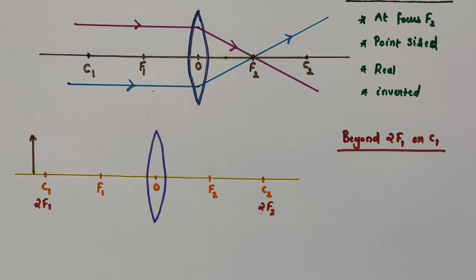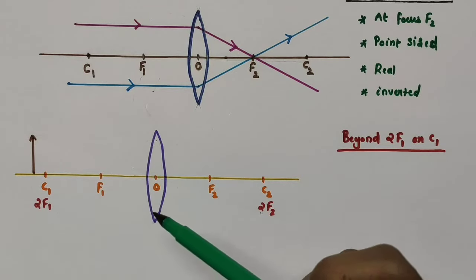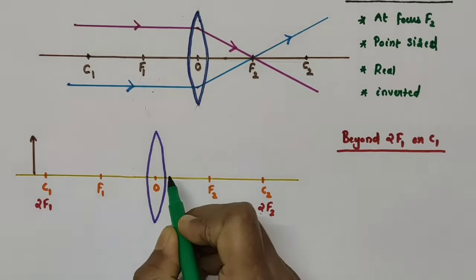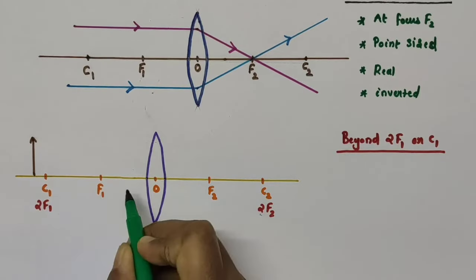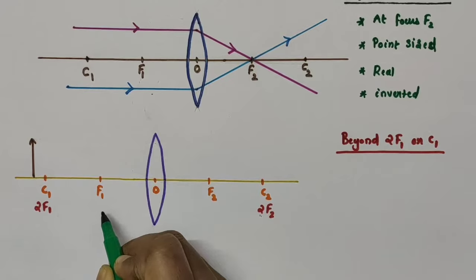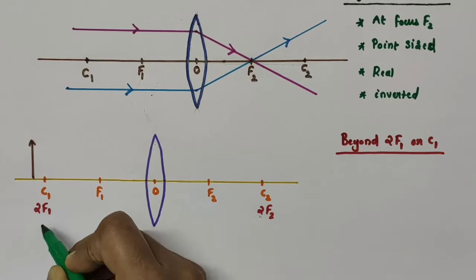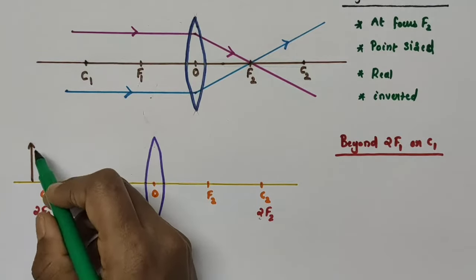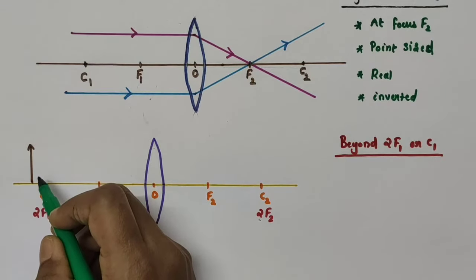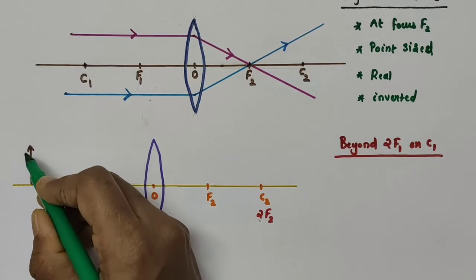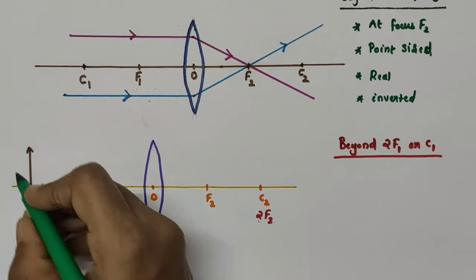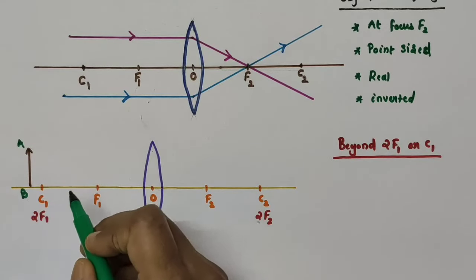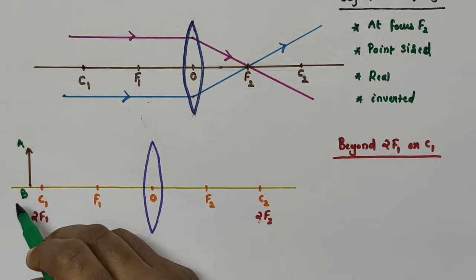Now let us discuss the second ray diagram using the convex lens. Here the object is kept beyond 2F1 or C1. The distance from the optical center to C1 is twice the distance from O to F1, so C1 can be taken as 2F1 and C2 can be taken as 2F2. I have already drawn an object AB of height 2 centimeters — draw a straight line of 2 cm and mark an arrow. AB is our object and it is kept beyond 2F1.